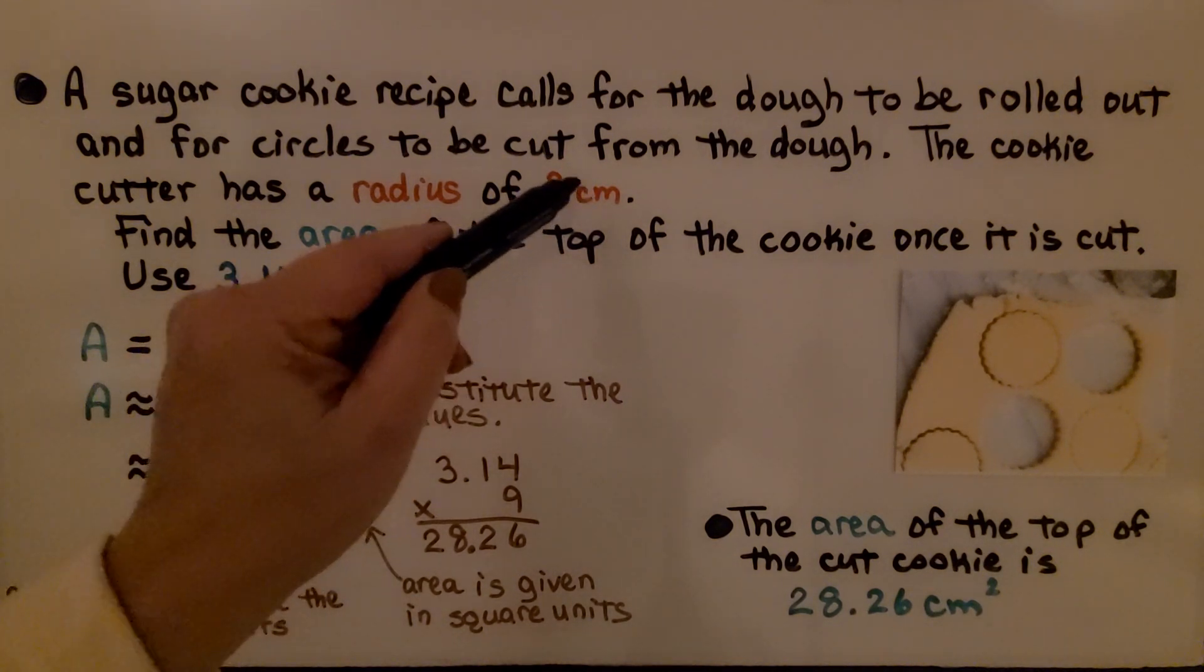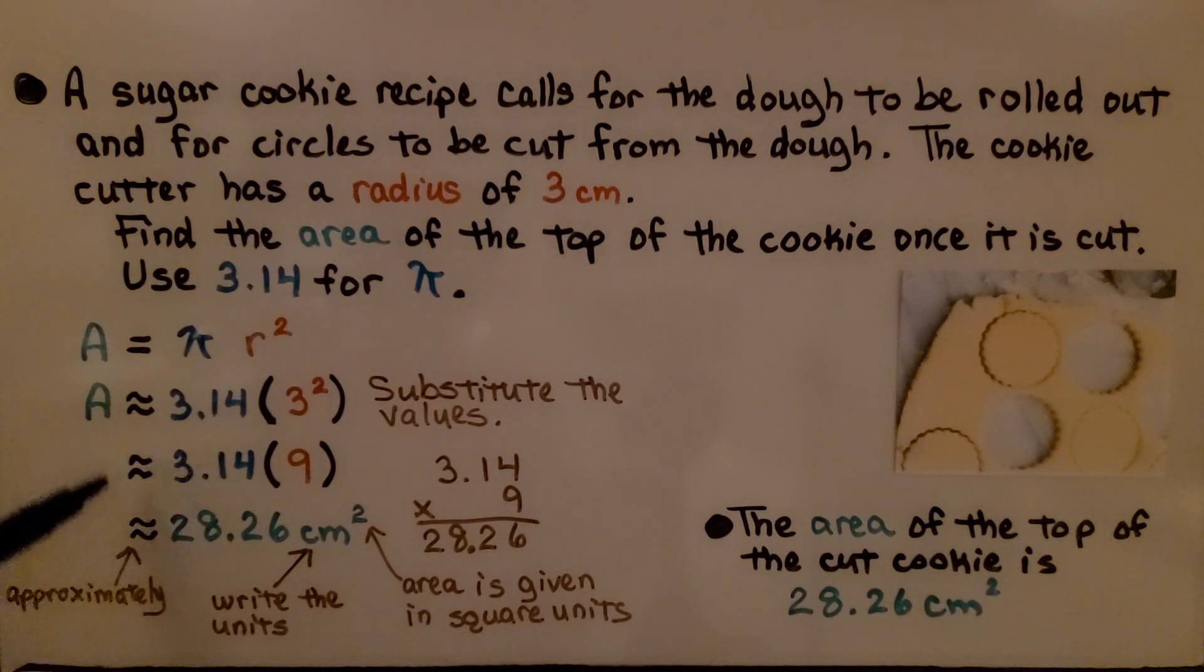Because this was in centimeters, we use the approximate symbol. We're not using the pi symbol, which represents all the digits of pi. We're approximating it to be about 3.14, so we need to use that approximate symbol. And we write the units, centimeters, and the area is given in square units. So the area of the top of the cut cookie is 28.26 centimeters squared.